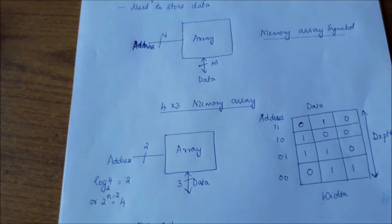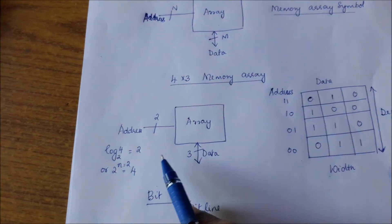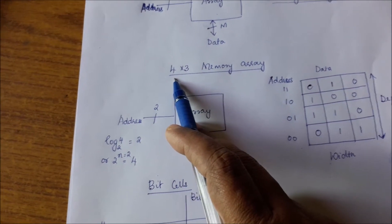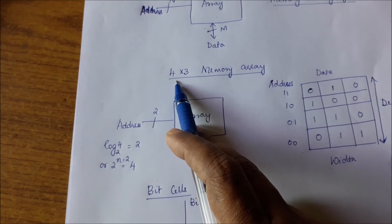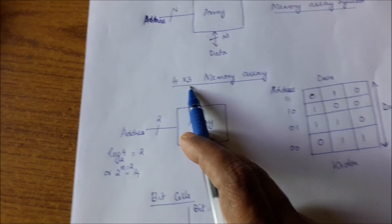So considering a 4 by 3 memory array. If you can see over here is a 4 by 3 memory array. 4 by 3 refers to how many memory words there are. 4 refers to the number of memory words. 3 refers to the number of bits in each word.